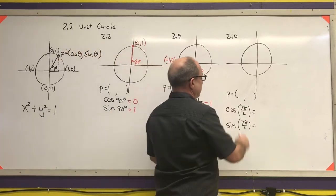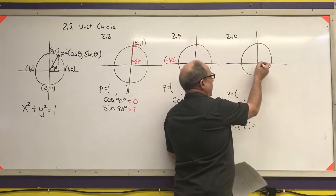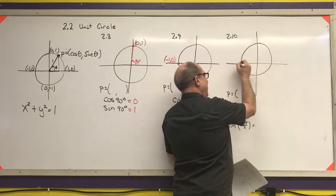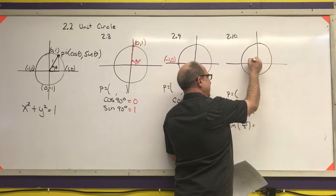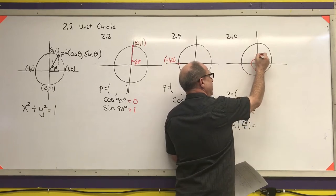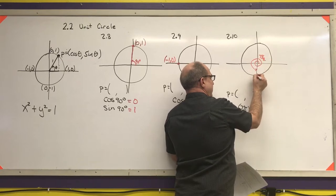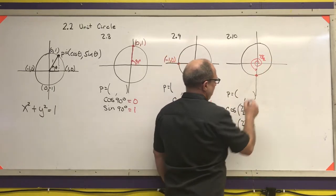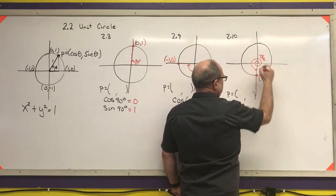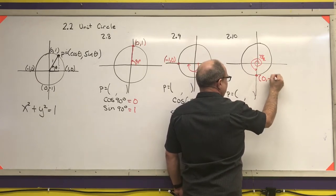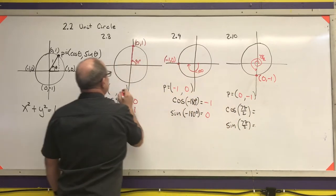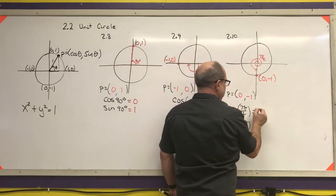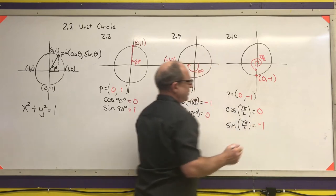Next example: 7π/2. Remember, going halfway around is π, so let's count: 1π, 2, 3, 4, 5, 6, 7 — that's 7π/2. Draw the point on the unit circle and label its coordinates: the x-coordinate is 0 and the y-coordinate is -1, giving (0, -1). So cosine is 0 and sine is -1.